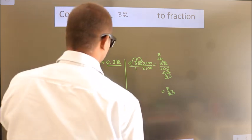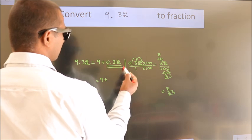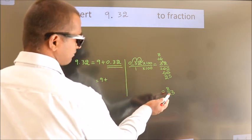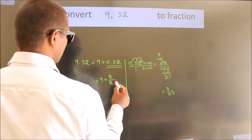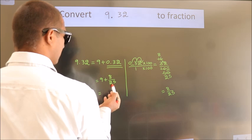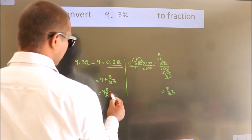Now here, 9 plus, in place of 0.32, we write this fraction 8 by 25. 9 plus 8 by 25. In mixed fraction, it is 9 and 8 over 25.